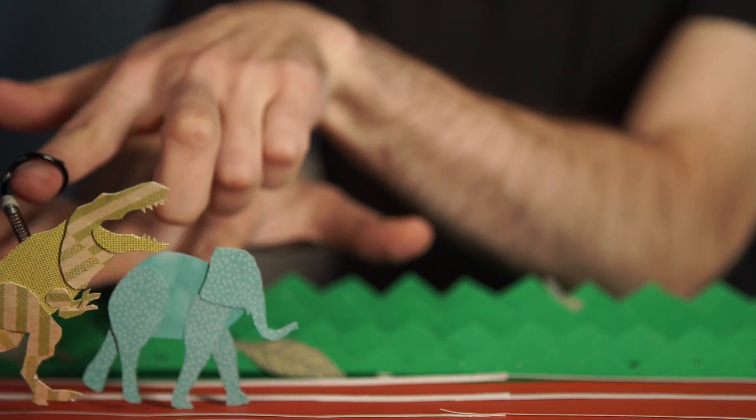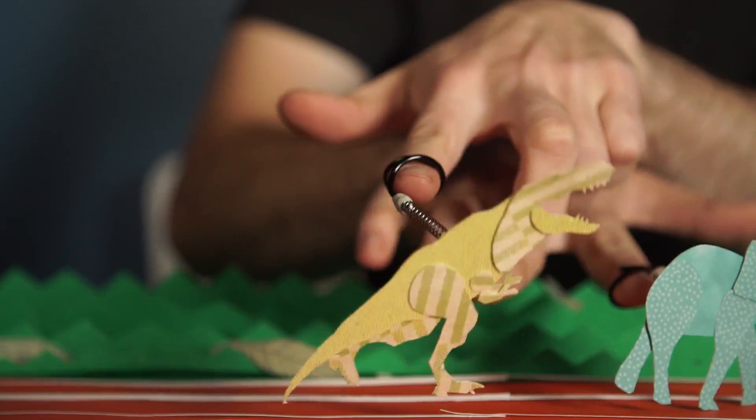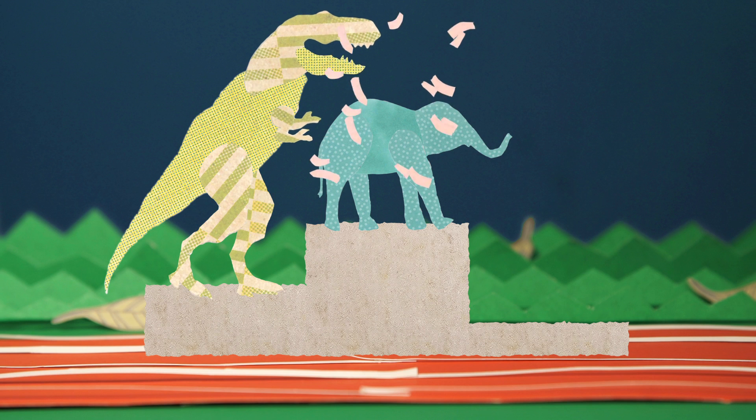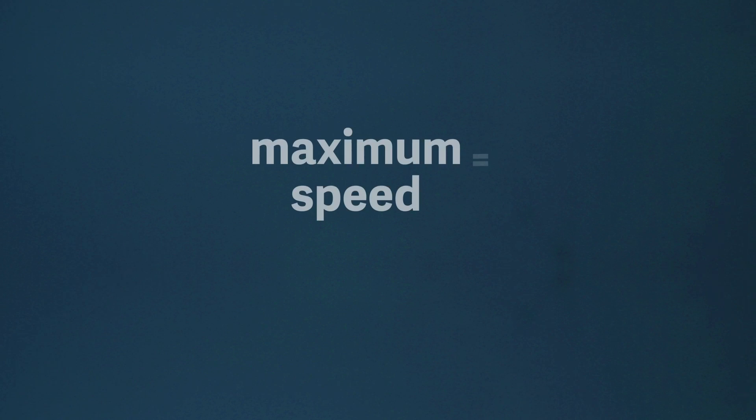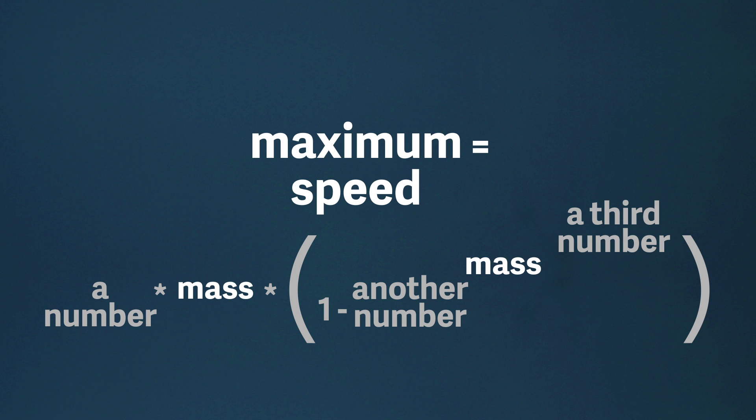What would win in a race between a T-Rex and an elephant? An elephant by a lot. We now know that because of a new formula that tells you the speed of any animal, living or extinct, based only on its size.